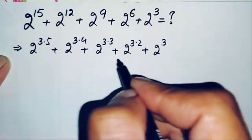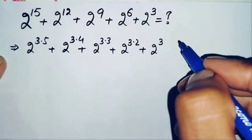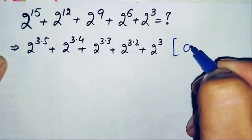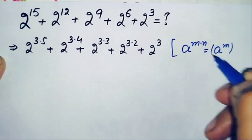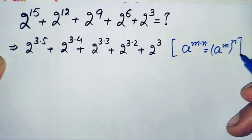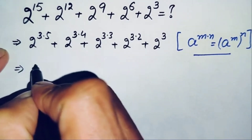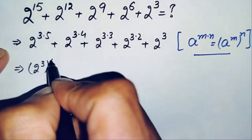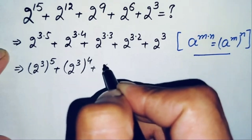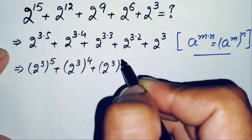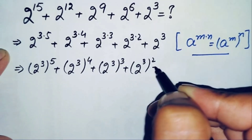Now in the first power terms we will use an exponential math property. That property is: a to power m times n equals (a to power m) whole raised to power n. Using this property, the equation simplifies to: (2 raised to power 3) whole raised to power 5, plus (2 raised to power 3) whole raised to power 4, plus (2 raised to power 3) whole raised to power 3, plus (2 raised to power 3) whole raised to power 2, plus 2 raised to power 3.